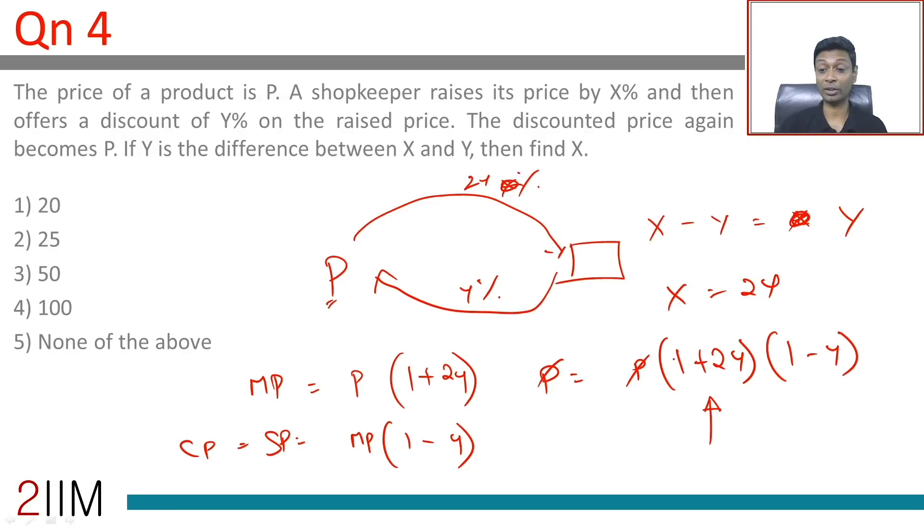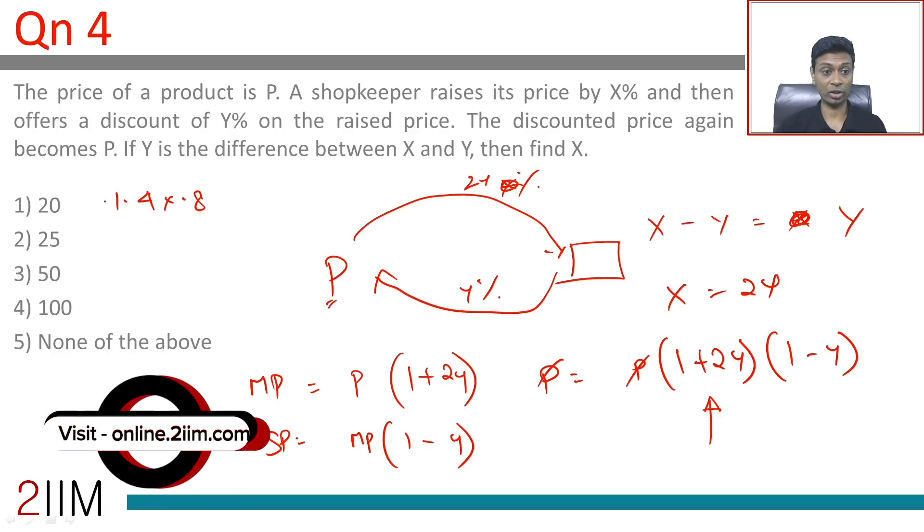I'm going to go from answer choices. 1 plus 2Y to this, 1.4 into 0.8, that's not 1. We're finding X. So if X were 20, Y would be 10%, that's 1.2 into 0.9, that doesn't work.